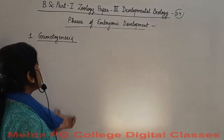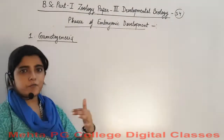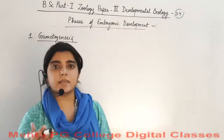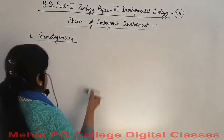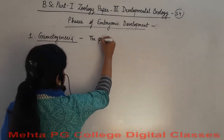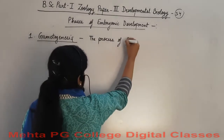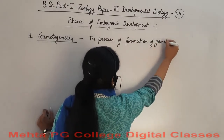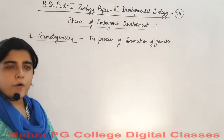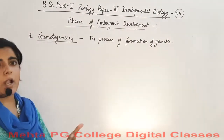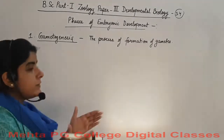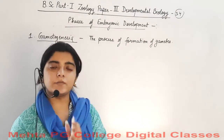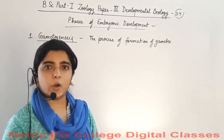The first stage or first process of embryonic development is gametogenesis. Gametogenesis is the process of formation of gametes. When gametogenesis occurs differently in males and females, they have different terms.